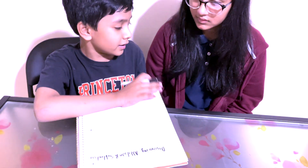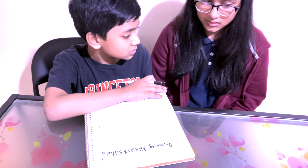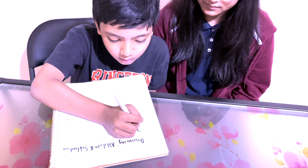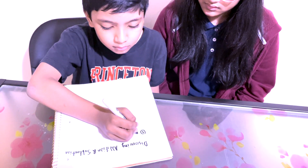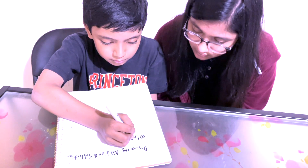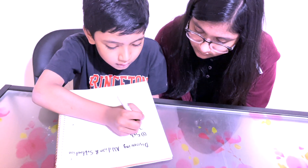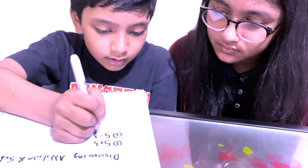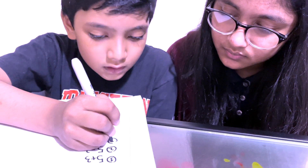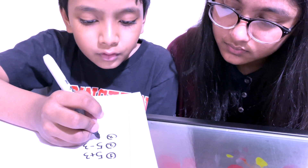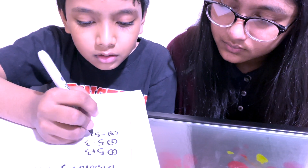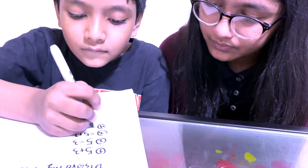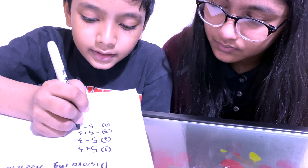Give me your two favorite numbers. Five and three. All right, let's use five and three. Number one: five plus three. Two: five minus three. Three: three minus five, or minus five plus three. And four: minus five minus three.